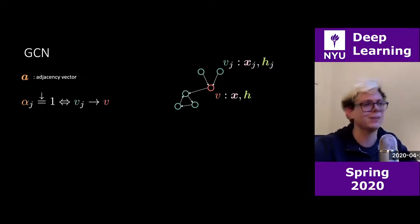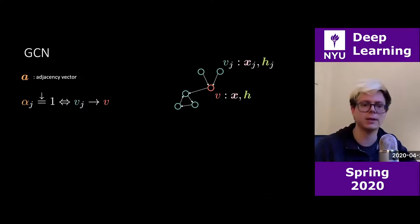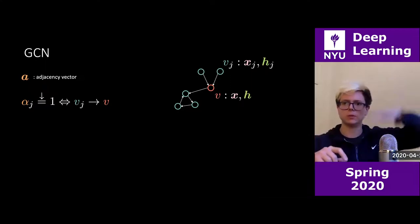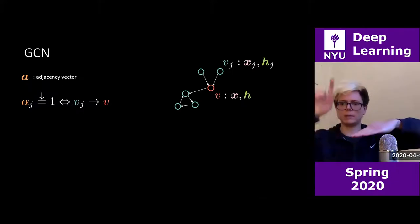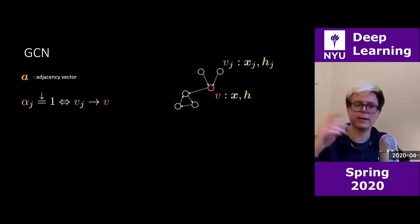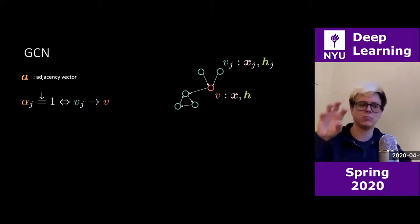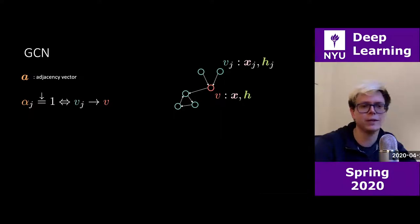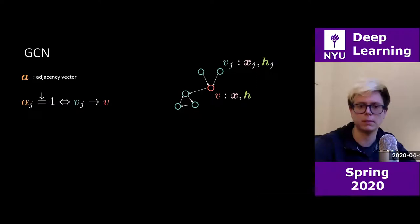My vector a has components alpha_j equal to one whenever there is an incoming arrow from vertex vj to myself. In attention, we computed a as the soft argmax of scalar products of keys times a query — producing scores telling you who to look at. In graph convolutional networks, this structure is given to you already. The adjacency vector has ones corresponding to vertices that have arrows pointing towards the red vertex.